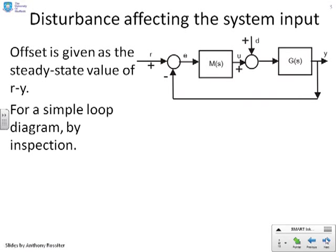Here's a loop with two loop inputs. You'll see there's a loop input R, which we'll assume is the target, the value that we want Y to track. And there's another loop input here, which we've called D, which we'll consider as a disturbance signal. This disturbance signal is affecting the system input, because you can see it adds onto the signal U before you go into the process G.